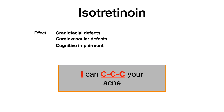On your exam — this is a bit more applicable for Step 2 / Level 2 — if they give you a patient with really bad cystic acne refractory to first or second line treatment, they may ask what you need to do before prescribing isotretinoin. Sometimes they won't name it specifically, but they're suggesting isotretinoin, and the answer would be serial pregnancy tests.